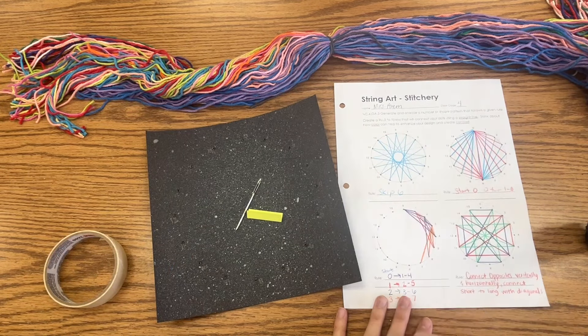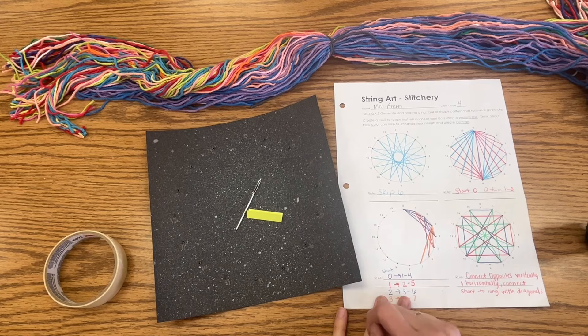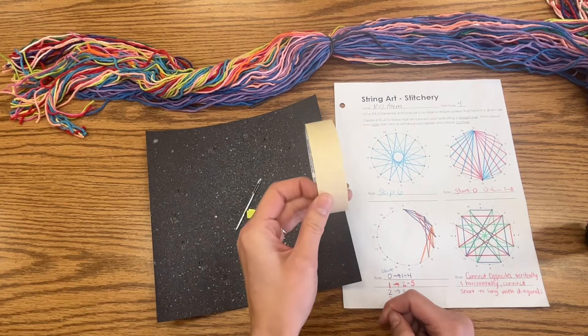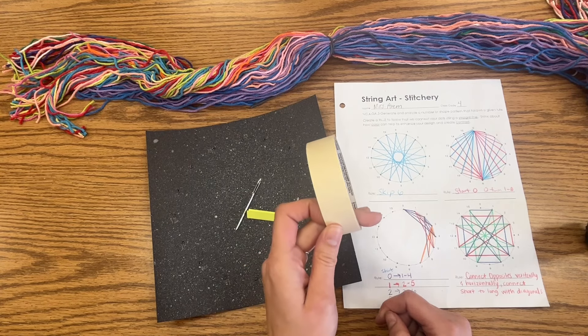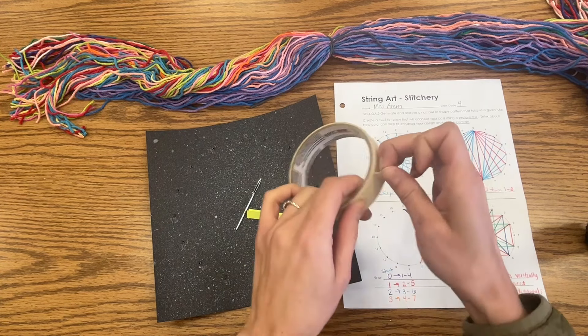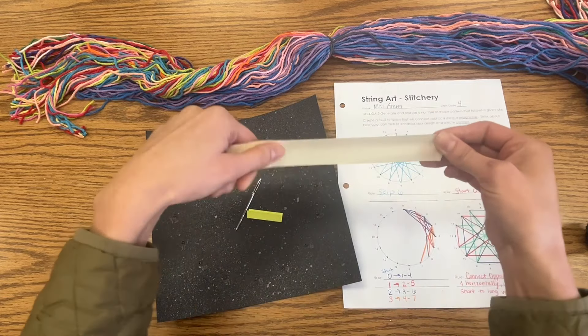First things first, we need to get some tape ready on the edge of our table, because you don't want to have to be tearing off a piece every time you need it. You want to have a little stockpile ready to go.